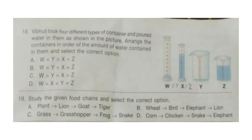Question 19: Study the given food chain and select the correct option. The correct answer is option C: Grass → Grasshopper → Frog → Snake.